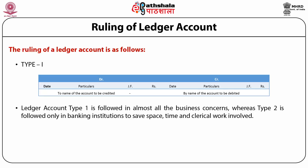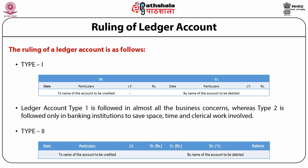Ledger account Type 1 is followed in almost all business concerns. There is another type, Type 2, which is followed only in banking institutions to save space, time, and clerical work. In Type 2, the columns are: date, particulars, journal folio, then a fourth column divided into debit and credit, a fifth column divided into debit or credit, and a last column showing balance.